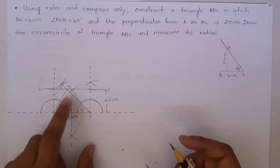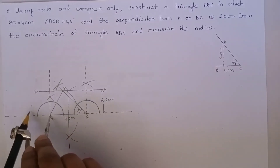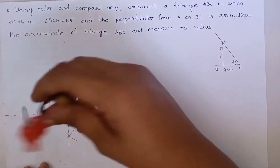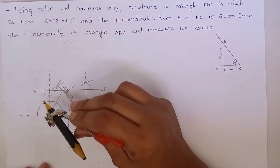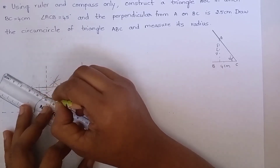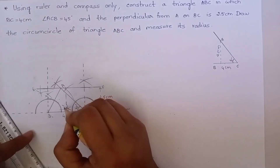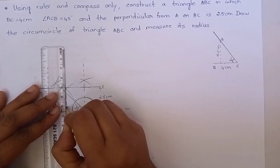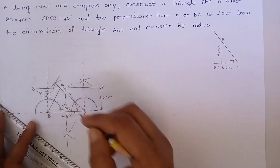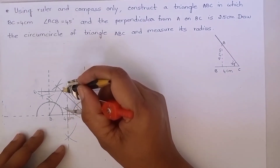Now let us take the perpendicular bisector of AB. We have to take more than half of AB. Keep the compass on the point B and draw an arc. Keep the compass on the point A and draw an arc and join this. These two perpendicular bisectors meet at this point. Let us name it as O. Taking OA as radius, let us draw a circle.